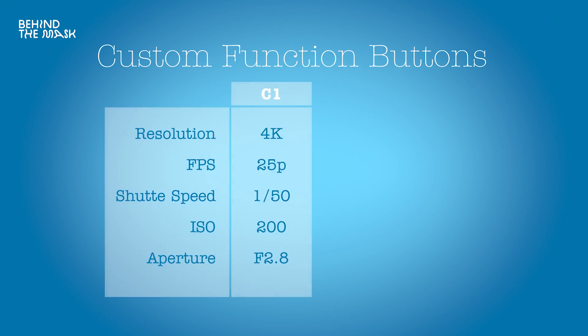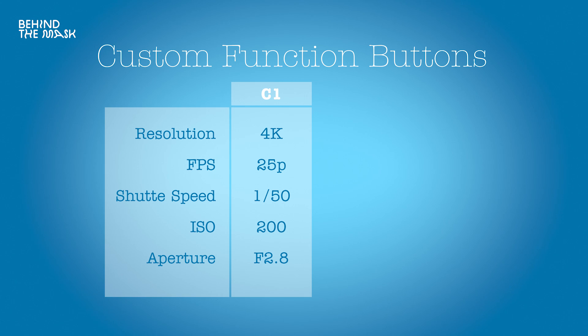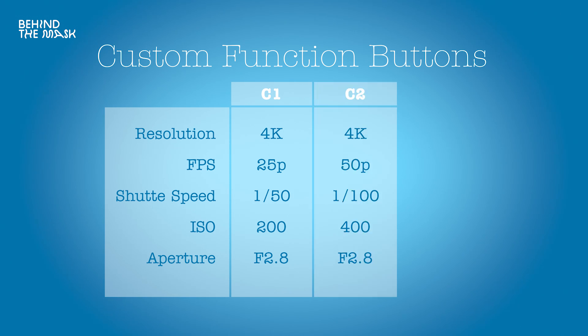You don't have to think about whether you set the frame rate or ISO right — you can preset everything before the dive. I set C1 to 4K, 25 frames a second, 1/50th shutter speed, ISO 200 and aperture f/2.8. And then I set C2 to 50 frames a second, 1/100th shutter speed, also 4K.